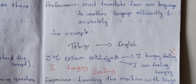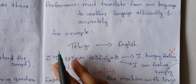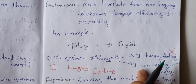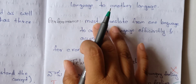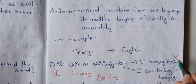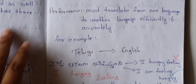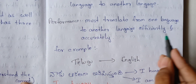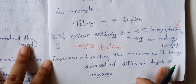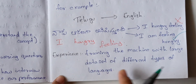The correct statement is 'I am feeling hungry.' So it will be accurate. The performance must translate from one language to another efficiently and accurately. Experience is training the machine with a large dataset of different types of languages so it improves over time.